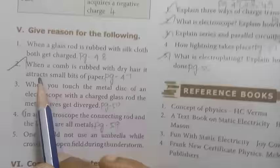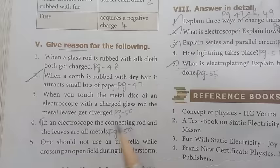1 mark, give reason: When a comb is rubbed with a dry hat, it attracts small bits of paper. Give reason. This is important. One should not use an umbrella while crossing an open field during a thunderstorm.